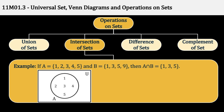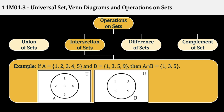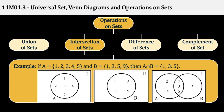इसको Venn Diagram से देखते हैं — यह रहा A Set, यह रहा B, तो A Intersection B को हम ऐसे दिखाते हैं: दोनों Circles का Intersecting Part है, वहाँ पर हम Common Elements डालते हैं. Left Side में A के Unique Elements हैं जो कि सिर्फ A में हैं, Right Side में B के Unique Elements हैं जो कि सिर्फ B में हैं.